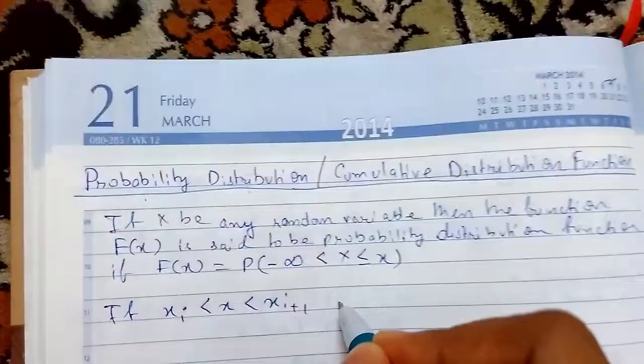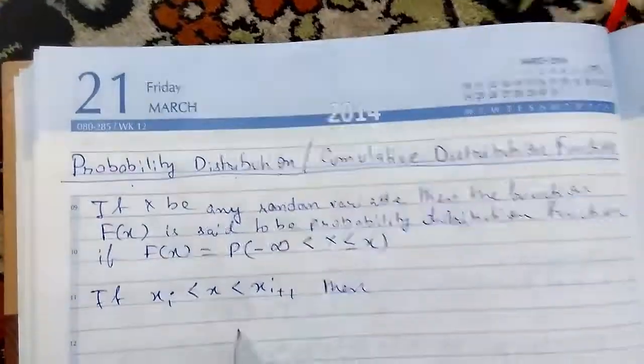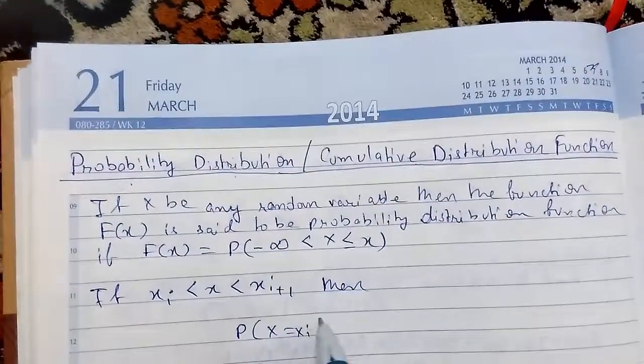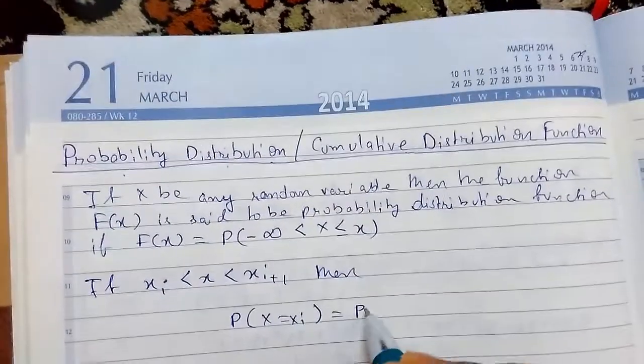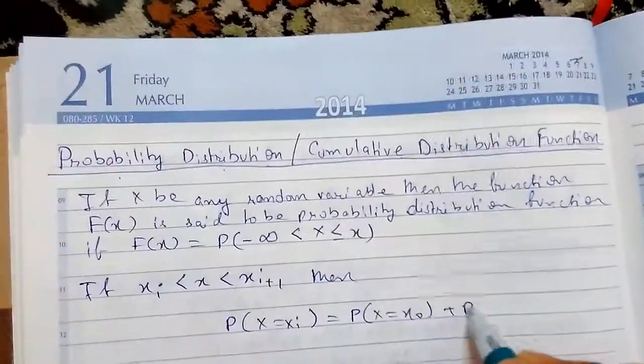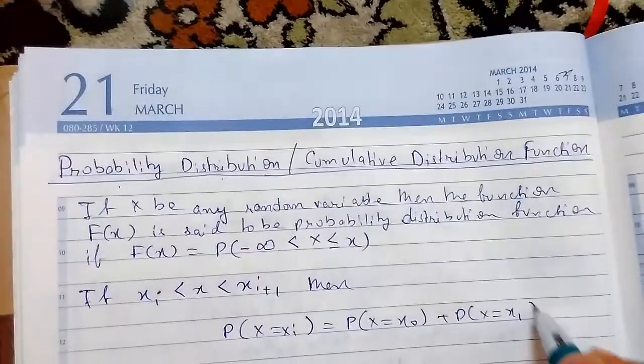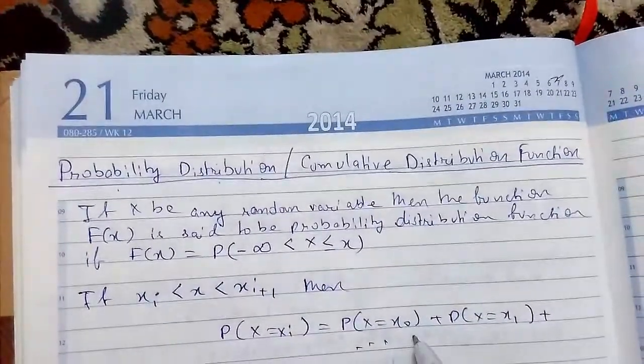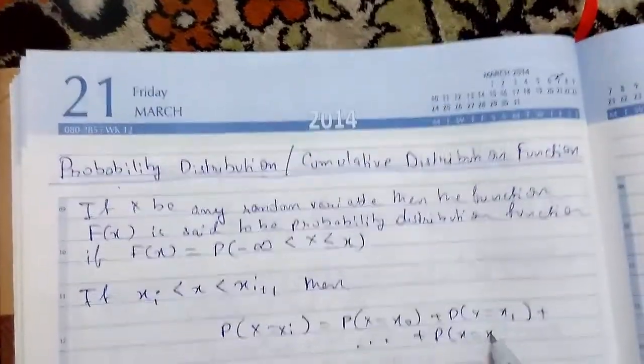Then probability of X equals X_i equals P of X equals X_0 plus P of X equals X_1 and up to P of X equals X_i.